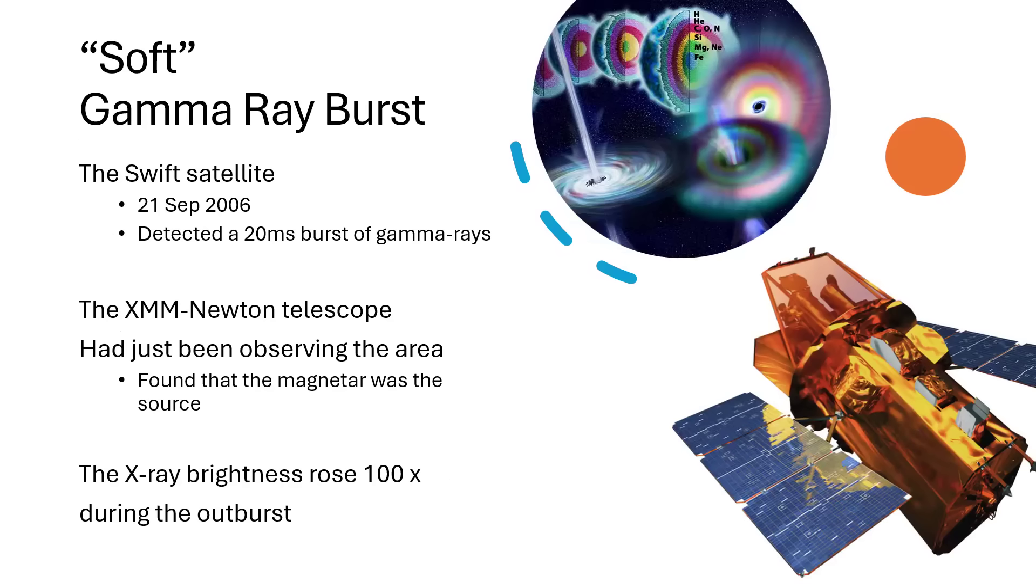Now, the SWIFT satellite spotted a gamma ray burst from this region as well. 2006, 20 millisecond burst of gamma rays. And very fortuitously, the XMM-Newton telescope, the X-ray telescope, had been observing that area just a few days prior to the 21st of September and this GRB. And it was able to determine that the magnetar was the source, seeing that the X-ray brightness rose by a factor of 100 during this outburst, the gamma ray burst. So something very, very interesting going on there. Maybe this magnetar finally had enough mass fall back upon it to tip it over the limit of the maximum mass for a neutron star and collapse down to a black hole with an enormous burst of gamma rays and X-rays. We're still following this one up.